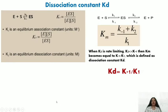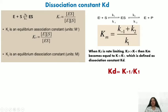Now we introduce a new term: the dissociation constant, Kd. For the reaction E + S ⇌ ES → E + P with all rate constants for forward and backward reactions, the Michaelis-Menten constant is Km = (k₋₁ + k₂) / k₁, where k₋₁ is the rate of decomposition of ES into E + S, k₂ is the rate of decomposition of ES into E + P, and k₁ is the rate of formation of the enzyme-substrate complex.